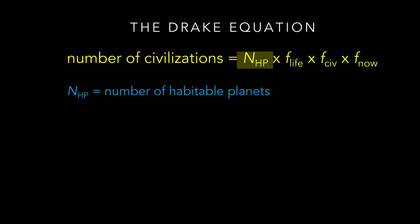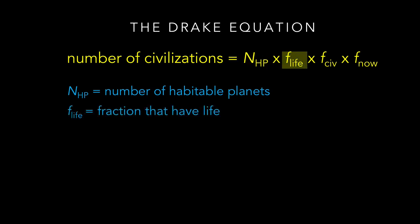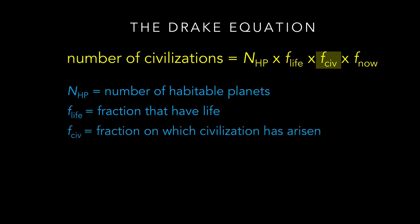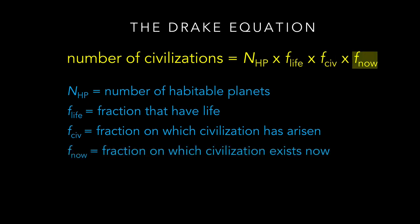On the right side, the first term is the number of habitable planets, or worlds, since this represents the total number of worlds on which there is at least a chance of life. The second term is the fraction of these worlds that actually have life on them. The third is the fraction of those worlds with life that at some point give rise to a civilization capable of interstellar communication. And the fourth is the fraction of those worlds on which the civilization is there now, so that we could in principle communicate with it, as opposed to only at some point in the distant past.